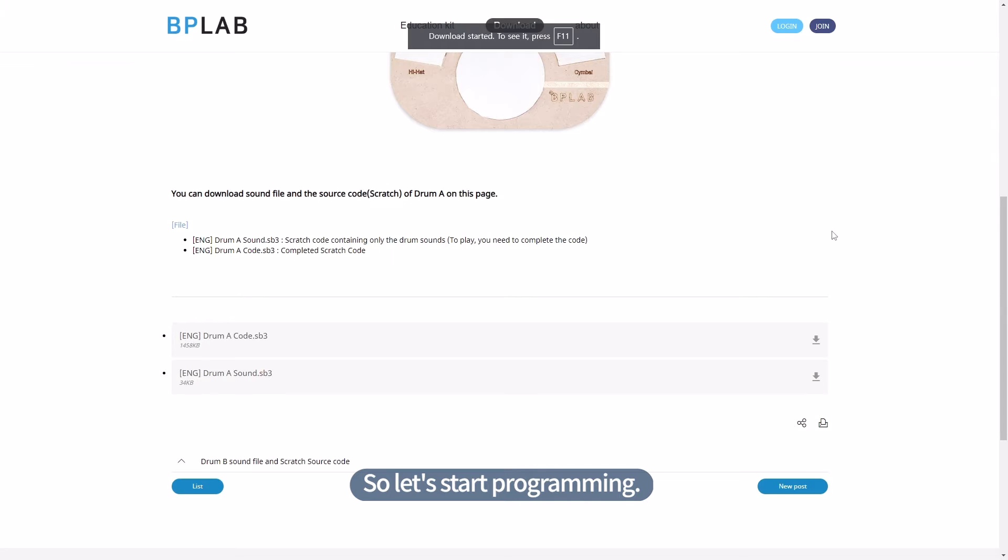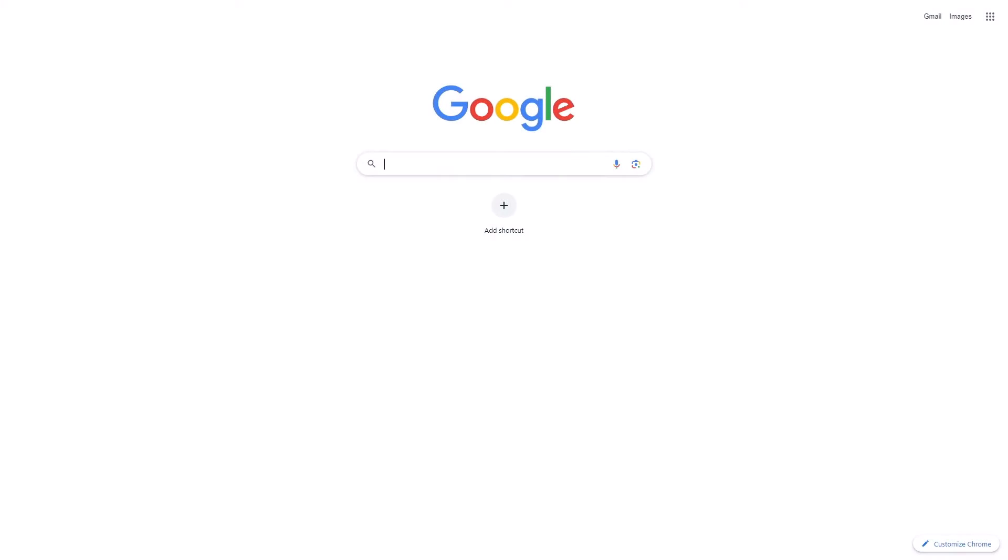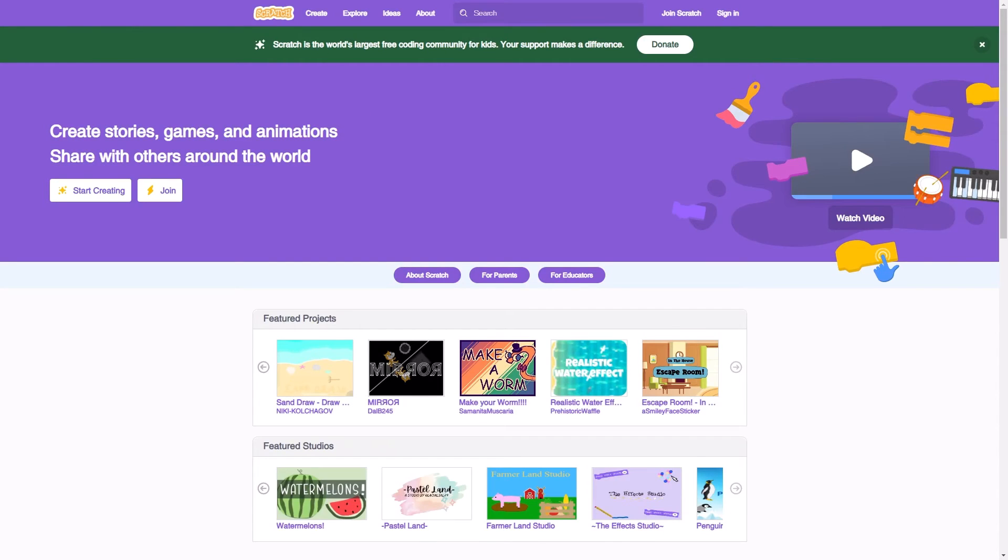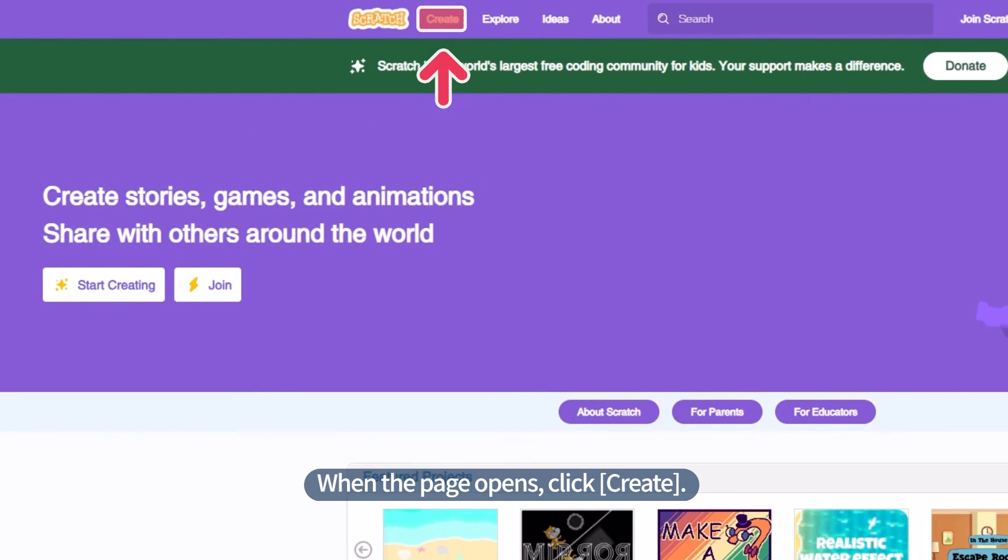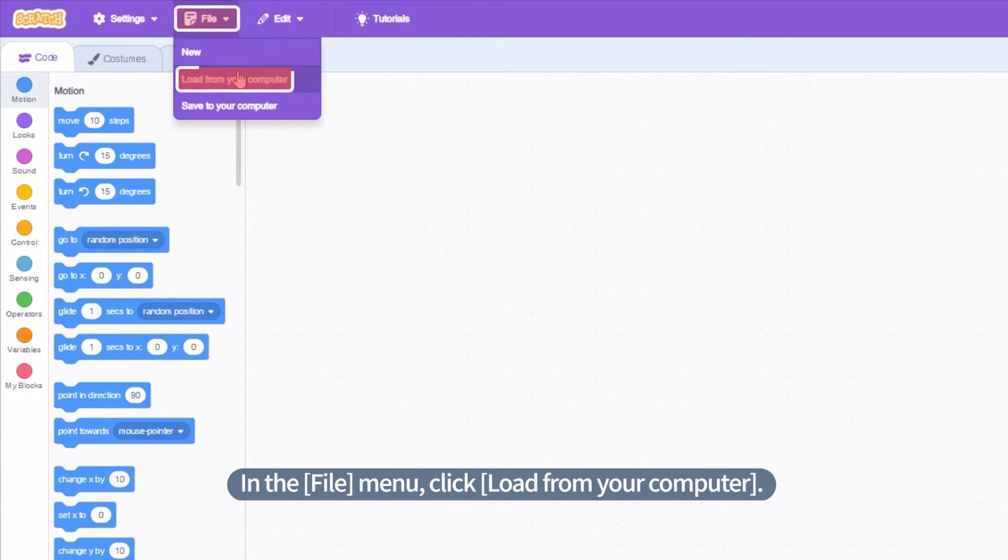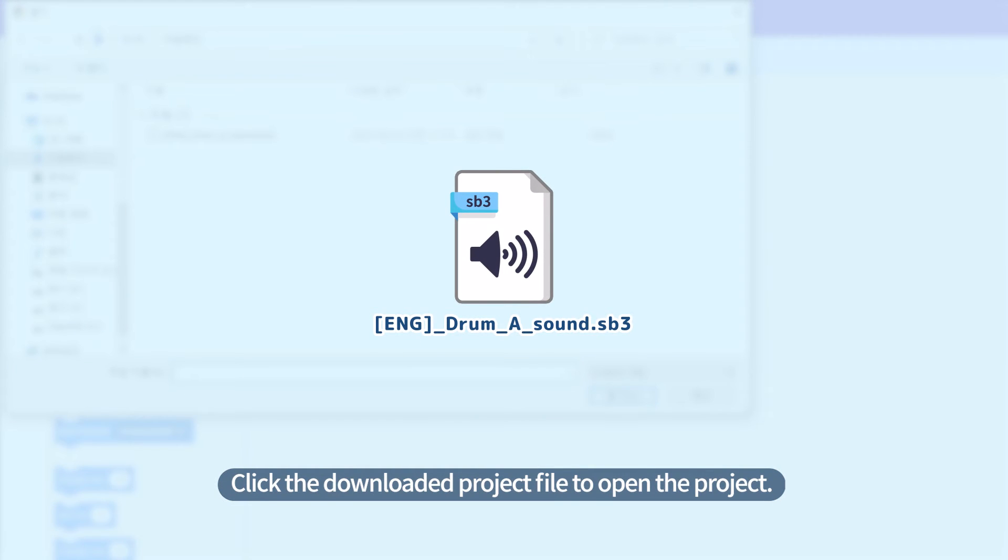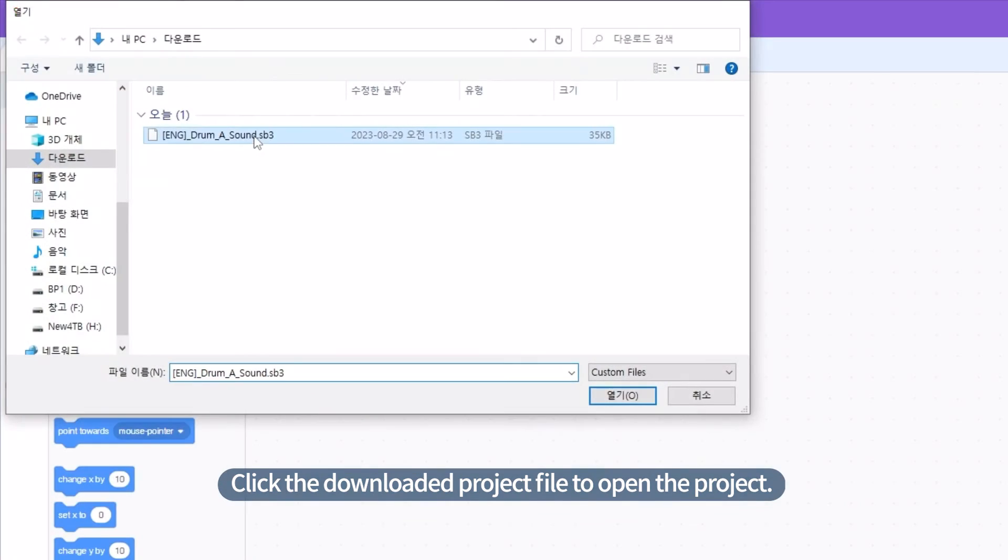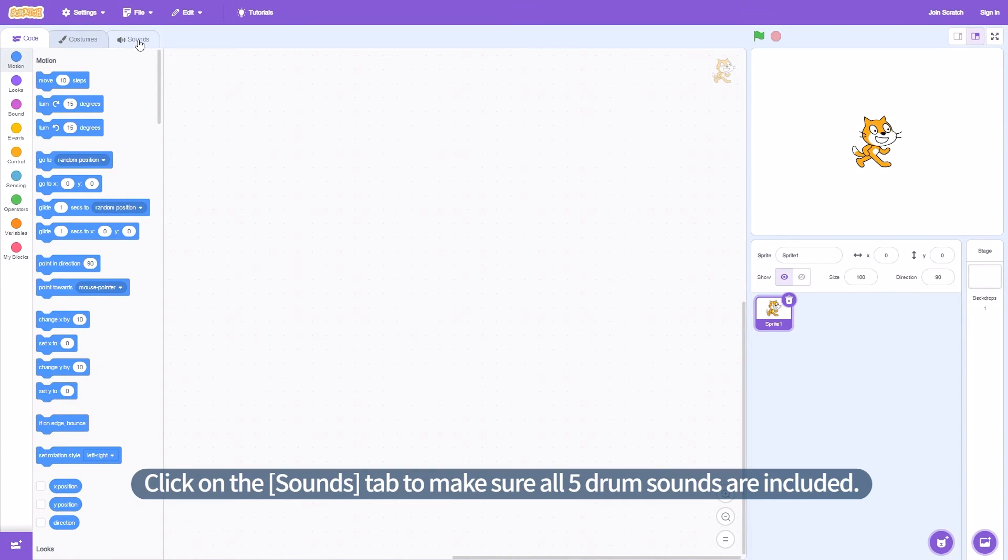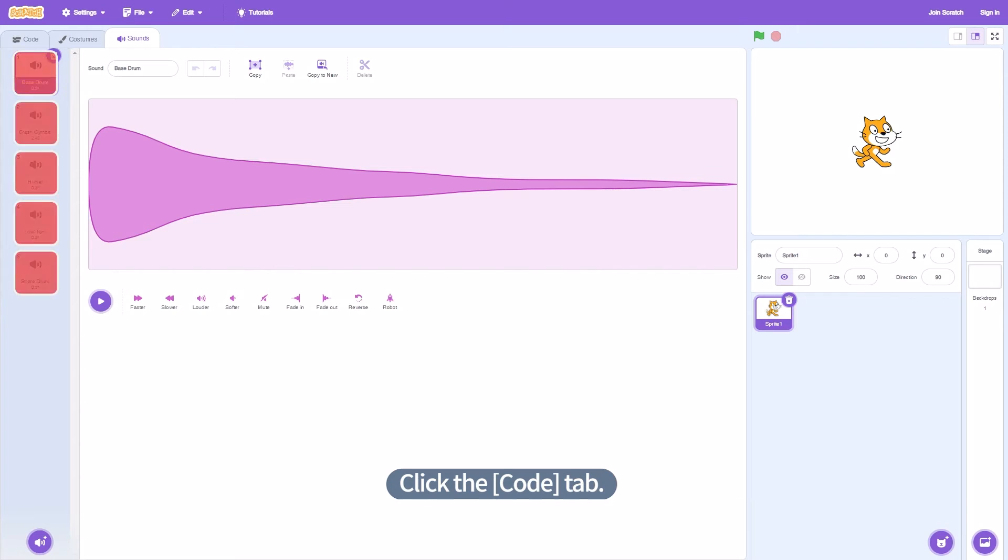So let's start programming. Access the site to get started with Scratch. When the page opens, click Create. In this file menu, click Load from your computer. Click the downloaded project file to open the project. Click on the Sounds tab to make sure all five drum sounds are included. Click the Code tab.